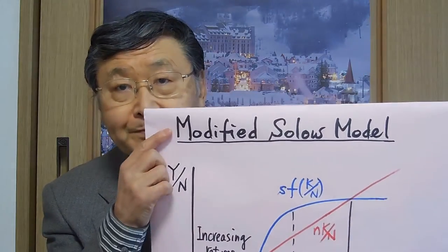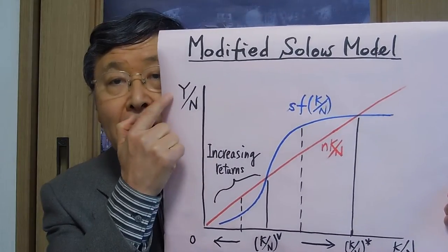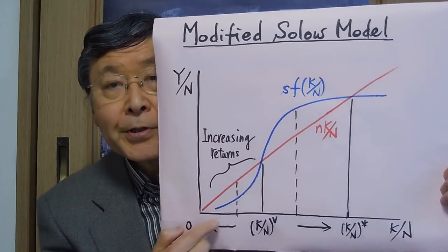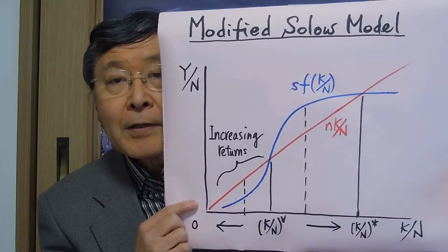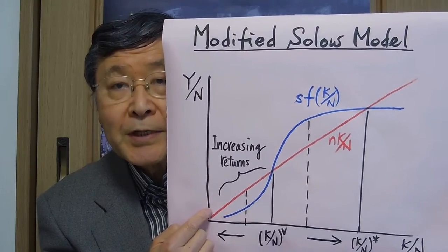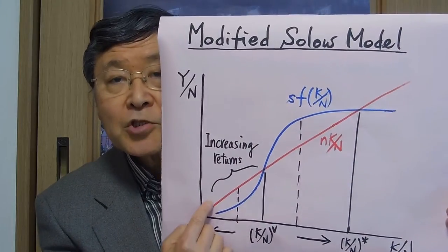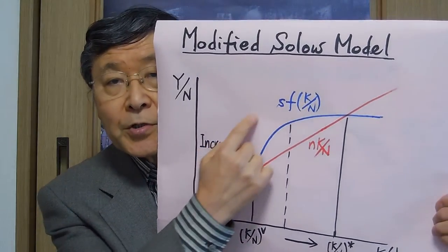Now, the question is how to formulate this kind of divergence movement. One way of doing that is to modify the Solow model we already studied, which will look like this. Here is the output-labor ratio on the vertical axis, and here is the capital-labor ratio on the horizontal axis. In the usual analysis, we assume a production function with decreasing returns all the way.